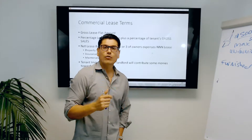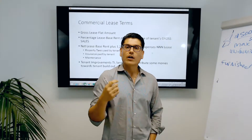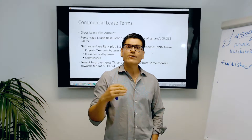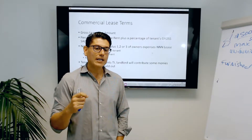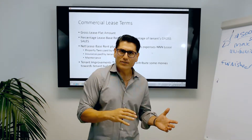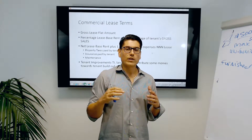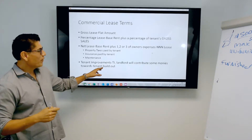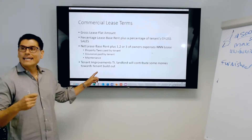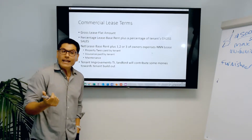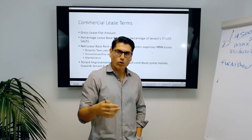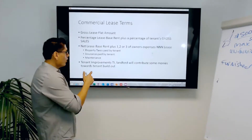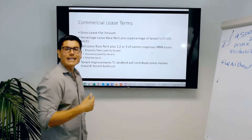Very often, a landlord might give the tenant some allowance for improvements because the landlord wants to keep you there, especially in commercial. In commercial, you're spending a lot of money to move your business and get it just right. So the landlord might give you some TI money — tenant improvement money. The landlord will contribute money towards your tenant build-out so that you stay. For the state exam, TI stands for tenant improvements.